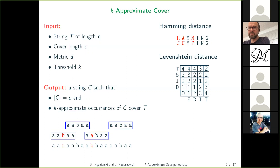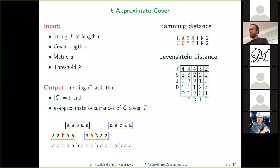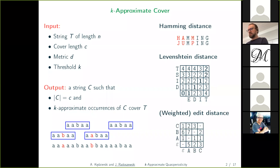We consider various metrics. One is the Hamming distance, which is just the number of mismatches. Another is the edit distance — unit edit distance or Levenshtein distance — in which we allow insertions, deletions, and substitutions, each with unit cost. This metric is often computed via the D array, a dynamic programming array. We also consider weighted edit distance, in which each edit operation has a specified cost given by a matrix.